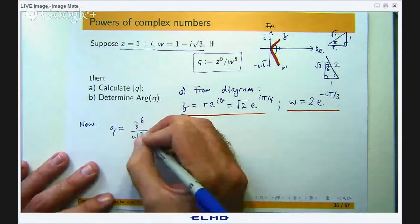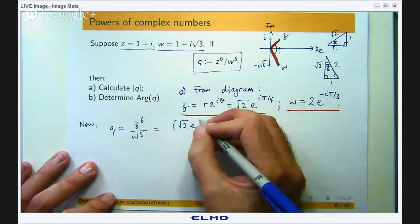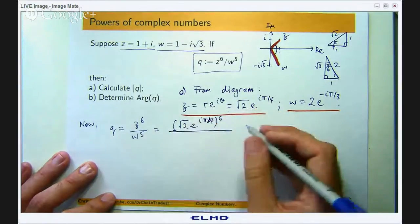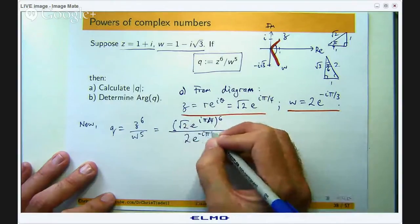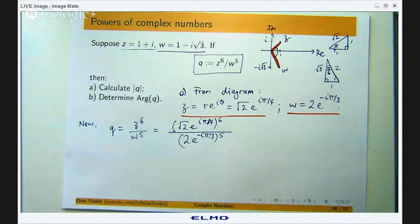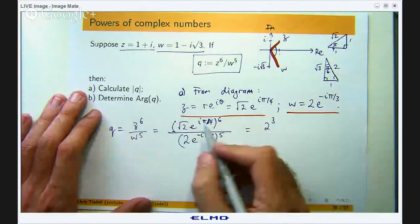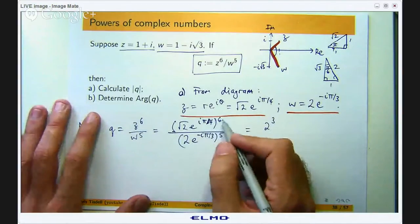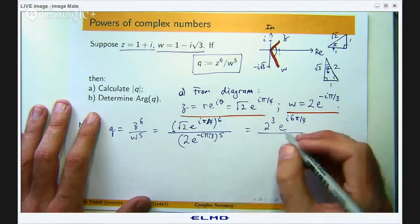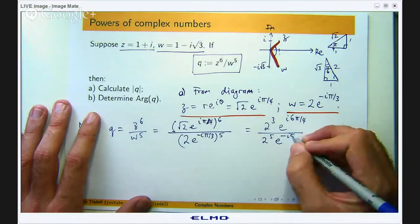Let us work out q first. z to the 6 over w to the 5, so that is just this to the 6 all over this to the power of 5. Then we can just use our index or power laws. You will distribute the 6 and distribute the 5 accordingly. √2 to the power of 6 is just the same as 2³. e to the iπ on 4 to the power of 6 is just e to the i6π on 4. On the bottom we are going to get 2 to the power of 5 times e to the negative i5π on 3.